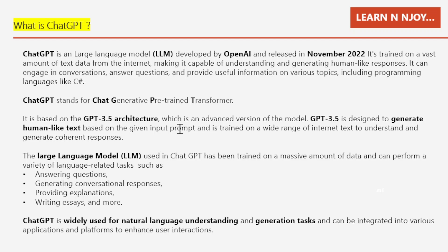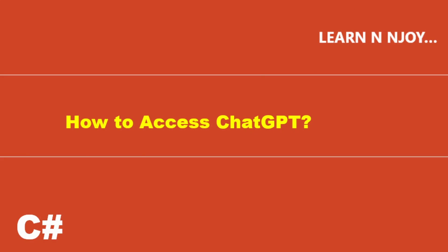The large language model used in ChatGPT has been trained on a massive amount of data and can perform a variety of language-related tasks such as answering questions, generating conversational responses, providing explanations, writing essays, and many more. ChatGPT is widely used for natural language understanding and generating tasks and can be integrated into various applications and platforms to enhance user interactions.